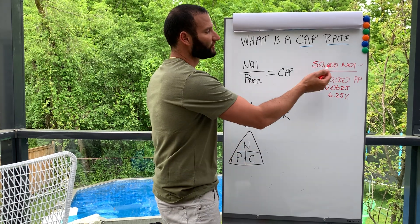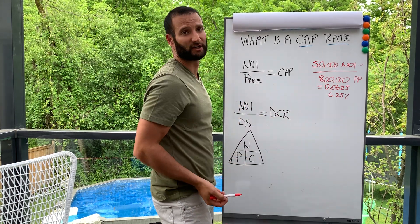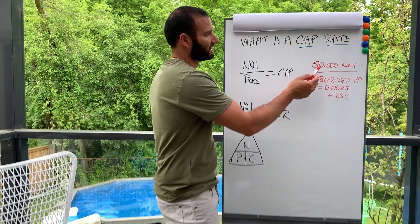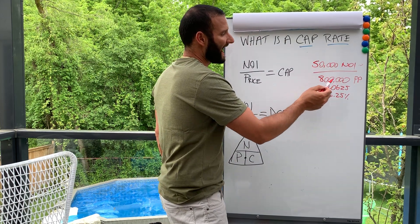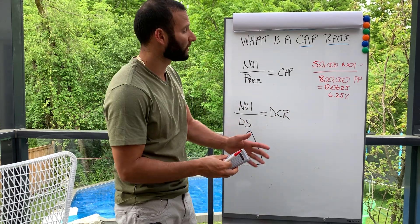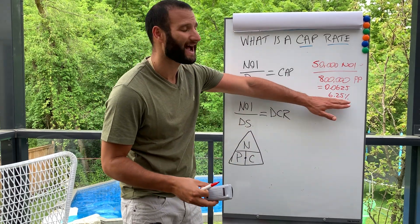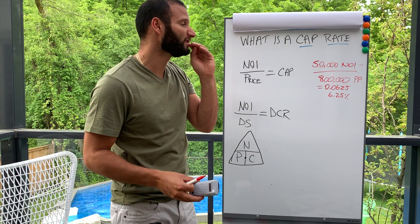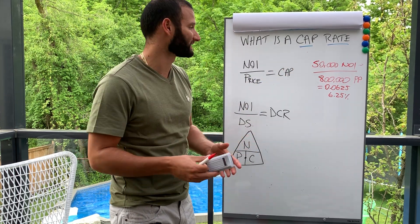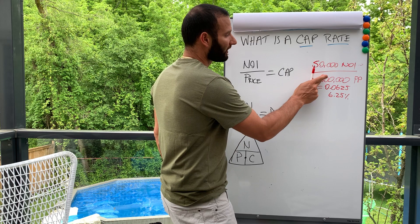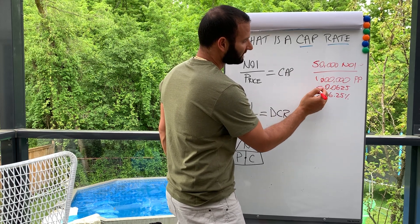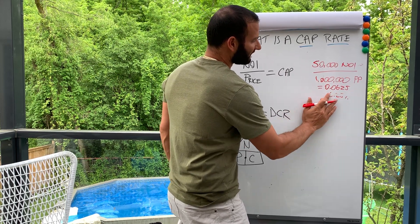The formula never changes — only the numbers change. And as the price goes down, the cap rate goes up. So when you're buying, you want the highest cap rate possible. When you sell, of course, you want to sell at the lowest cap rate possible.